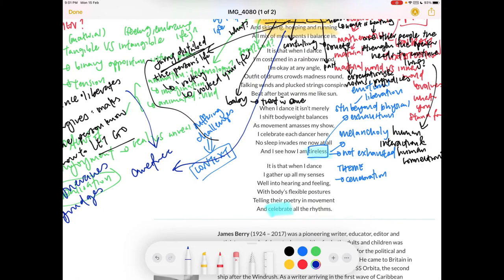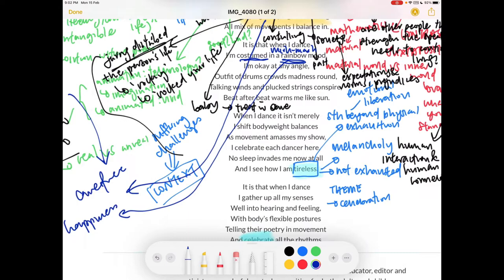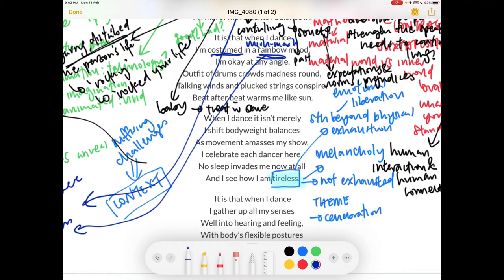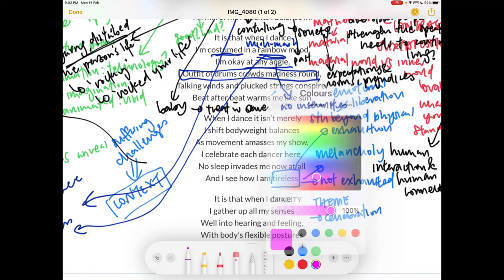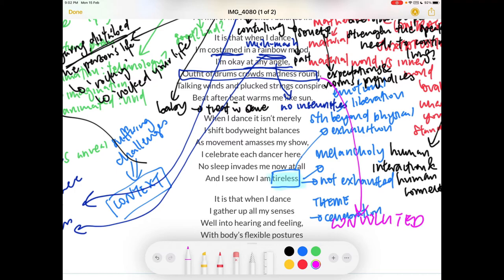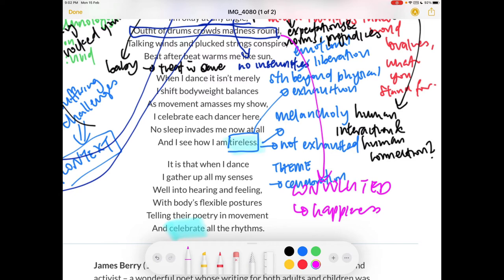It is that when I dance, I'm costumed in a rainbow mood. So it's a mishmash of moods. And rainbow usually is used to signify happiness. So when the person is dancing, the person is in an entire state of happiness. I'm okay at any angle. So no insecurities. Outfit of drums, crowds, madness round. Here this statement is quite convoluted. So perhaps we could make a statement about the convolution. It perhaps signals the happiness, maybe drunk, drunk demeanor of the person. The person is drunk on happiness. Because of this convoluted sentence which doesn't really make absolute sense, it's also a very deliberate choice on the poet's part.